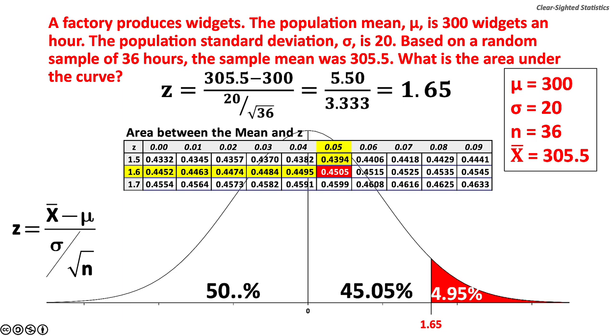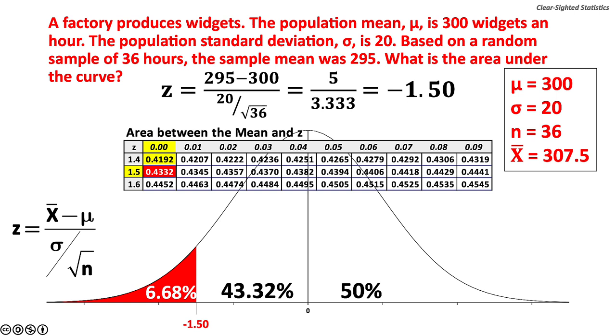The z value equals 1.65. The sample mean of 305.5 widgets produced represents 45.05% of the curve above the population mean. 4.95% of the curve is in the right tail, which is the area in red.